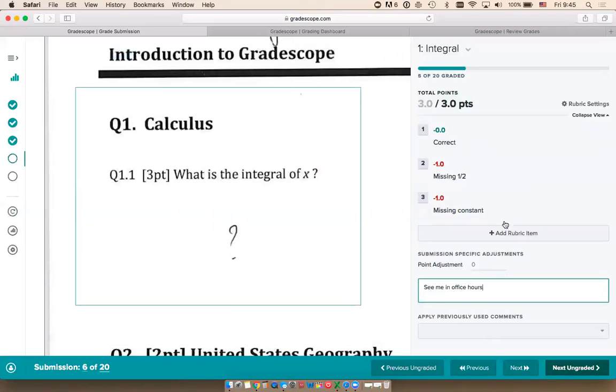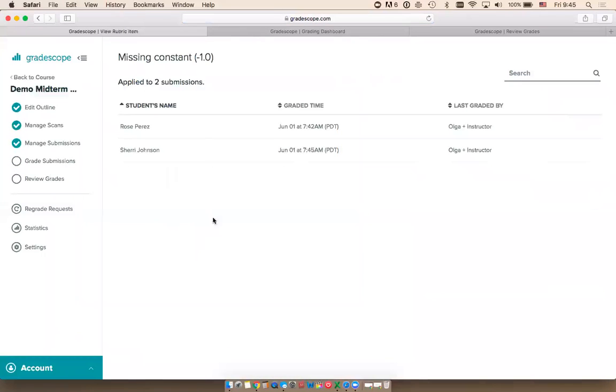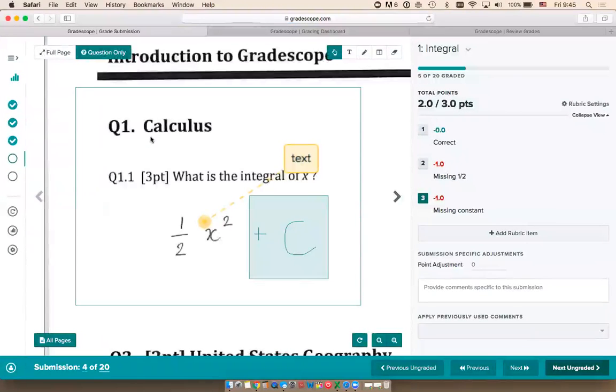If I ever want to check which students have a certain rubric item applied, I can hover over it and click on the magnifying glass. That's going to show me all the students who had that rubric item applied, so I can click on their names and double check that all the grading has been consistent. That's the basic grading interface.